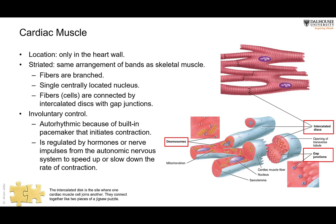There are desmosomes, hemidesmosomes, adherence junctions, and gap junctions as well. Many of these are gap junctions, which allow substances to pass from one cell to another because they have pores and gaps. So the muscle fibers communicate with each other through these gap junctions and contract like a syncytium — like a network — because of the presence of these gap junctions. Under the light microscope, you can see their location in the intercalated disk, which joins two cells together at their junction.